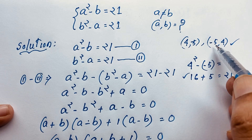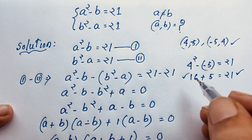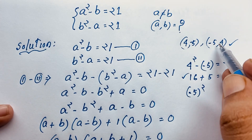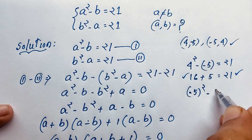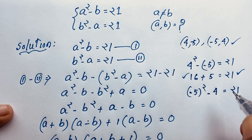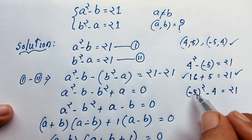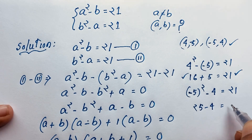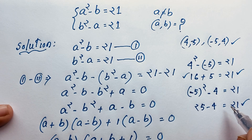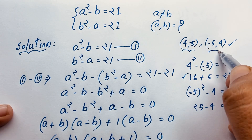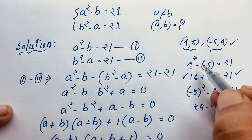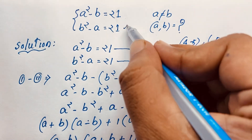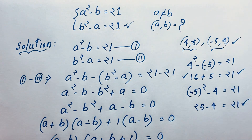For a equals minus 5: (minus 5) squared minus 4 equals 25 minus 4 equals 21. This is correct because minus 5 to the power of 2 is an even power, so it is always positive: 25 minus 4 equals 21. Left hand side equals right hand side in both cases. We have verified both solutions to this math olympiad question.